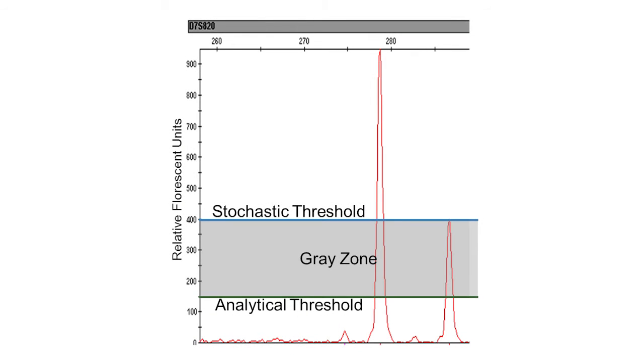The area between the analytical and stochastic thresholds is what we call the gray zone. DNA in the gray zone is in the stochastic region. Therefore, use caution when analyzing and interpreting gray zone data.